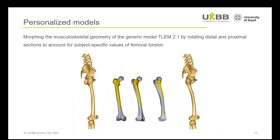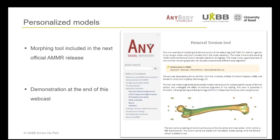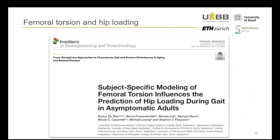For this reason, we decided to develop personalized models that account for variations in torsional alignment. We did this by taking the femoral geometry of the generic model TLEM 2.1 and morphing it by rotating the distal and proximal sections of the femur so that it could match a desired femoral torsion value for a specific subject. This morphing tool will be incorporated in the next release of the AnyBody model repository, and I will give a short demonstration at the end of this webcast.